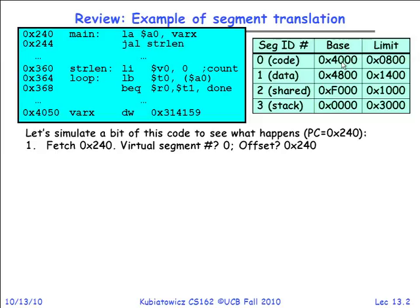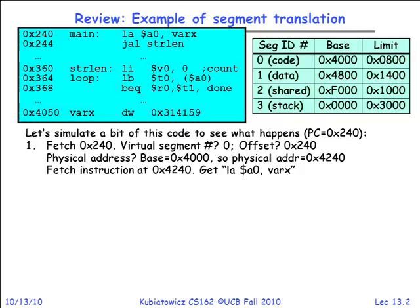Were there any questions on that? We're only really going to DRAM when we actually translate. Once we get our instruction, notice what this instruction is — it's load address of var x into A0. What's the address of var x? In virtual space, var x has an address of 0x4050. That's why we're moving 0x4050 into A0. All addresses in the CPU are virtual.